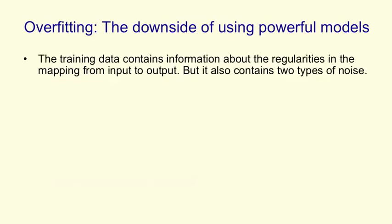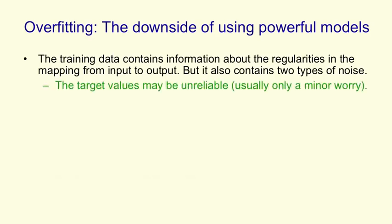The second set of issues is to do with how well the network generalizes to cases it didn't see during training. And the problem here is that the training data contains information about the regularities in the mapping from input to output, but it also contains two types of noise. The first type of noise is that the target values may be unreliable, and for neural nets that's usually only a minor worry.